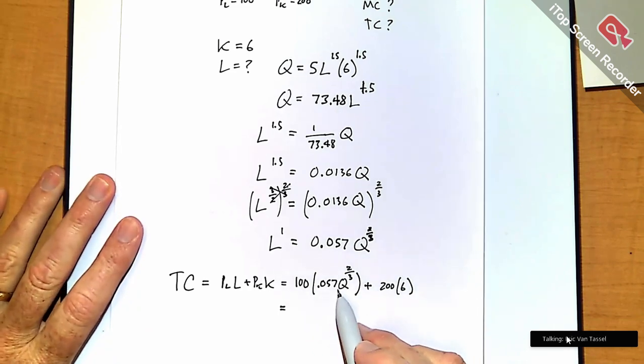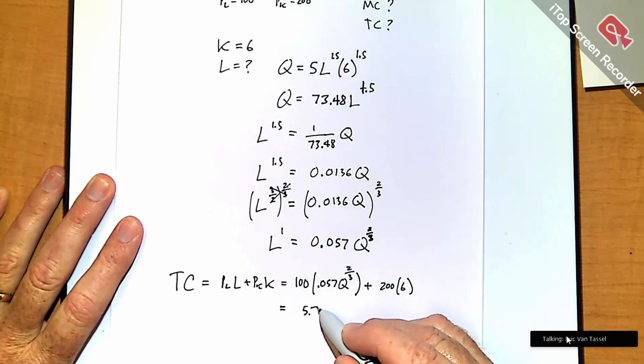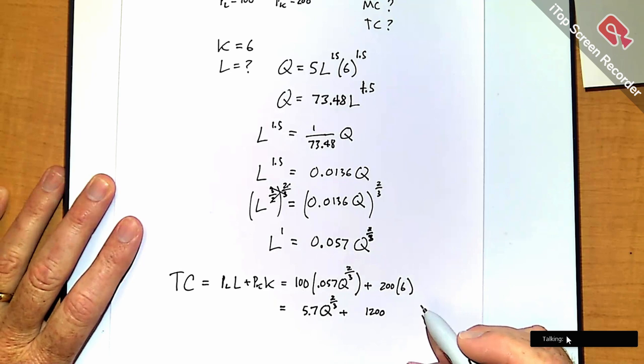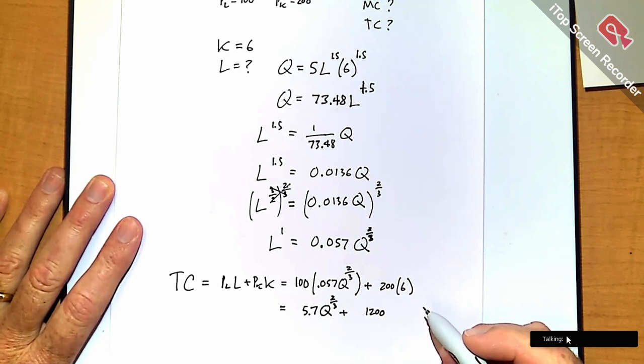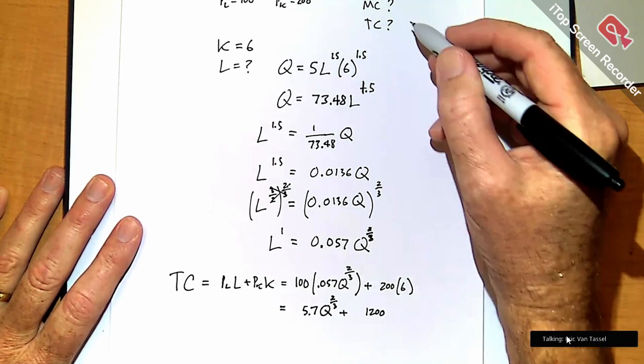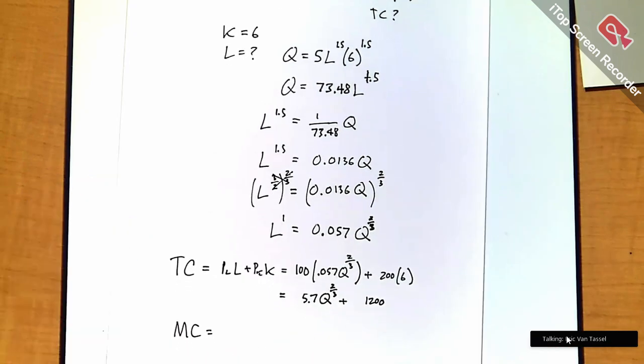So 100 times 0.057 is 5.7. Plus 200 times 6 is... Well, we want marginal cost, right? So unfortunately, we're still not done. The thing keeps going forever.